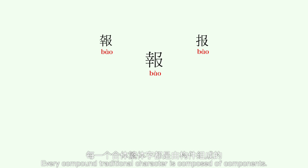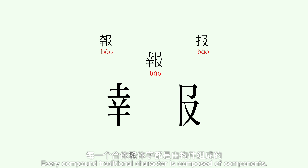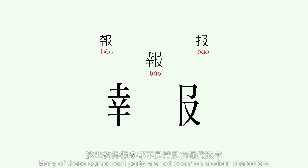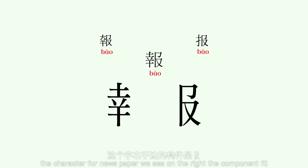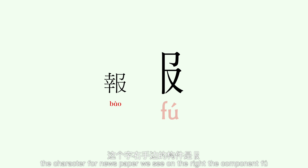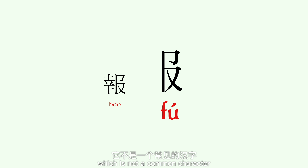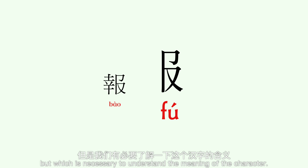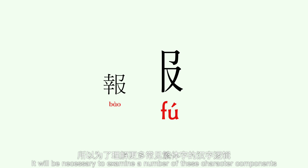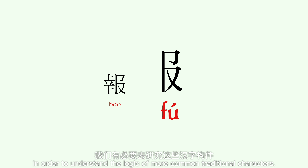Rare character components: every compound traditional character is composed of components. Many of these component parts are not common modern characters. In the character Bao, the character for newspaper, we see on the right the component Fu, which is not a common character but which is necessary to understand the meaning of the character. It will be necessary to examine a number of these character components in order to understand the logic of more common traditional characters.